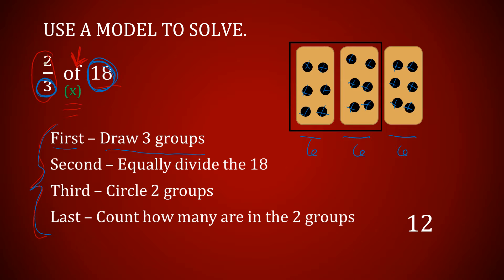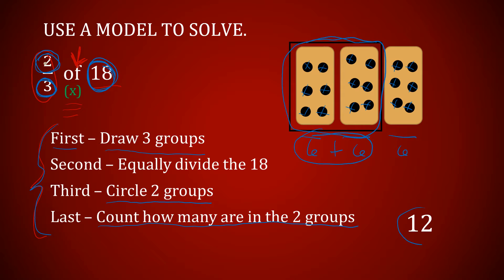The third step is to circle two of those groups, because my numerator says I want to count two of the three groups. So I take and circle two of those groups. Then last, we count how many are in the two groups. There are six in each group, so six plus six gives me 12.